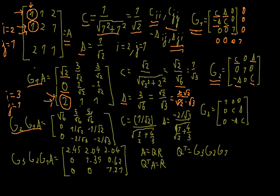We apply the second Givens rotation and get: square root of 6, 5 over square root of 6, 5 over square root of 6, 0, 1 over square root of 2, negative 1 over square root of 2, 0 as expected, negative 2 over square root of 3, negative 2 over square root of 3. As expected, the element is now 0. Now again we redo everything, but this time be careful — we want to eliminate this next element, and we will only consider the submatrix formed by the remaining rows and columns.